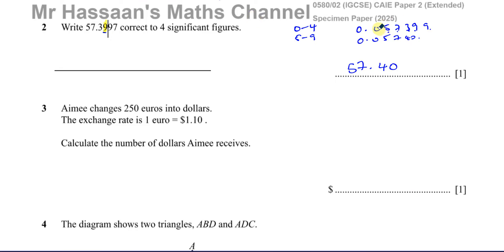There's also the case where you might have something like 57.03997. In this case, there's a zero here. Now, if a zero comes between non-zero numbers, then it is significant. So this would still be a significant figure, and that would be the fourth significant figure. Just to clarify some of the misconceptions that people have.